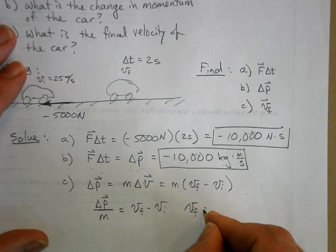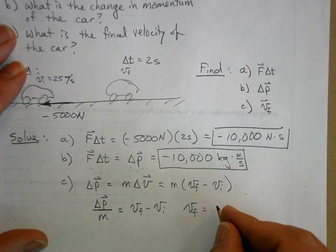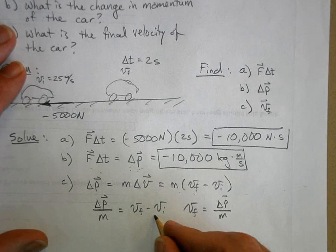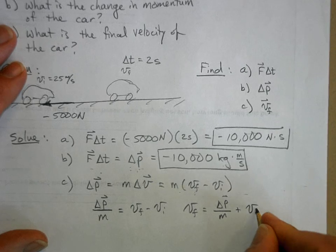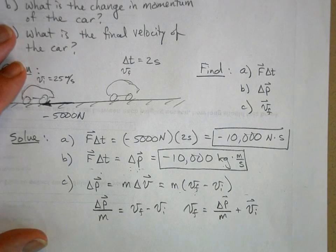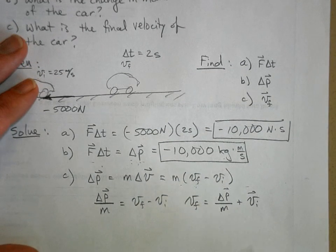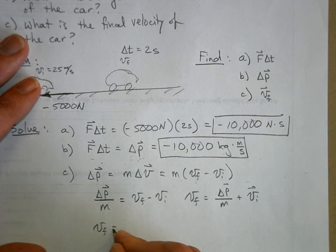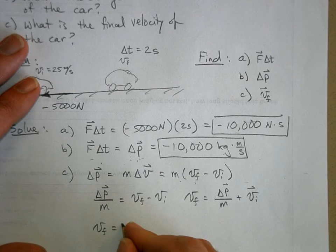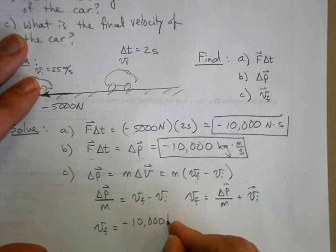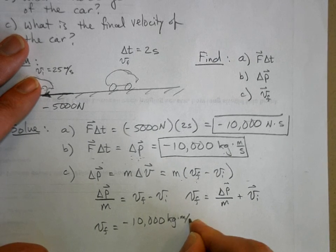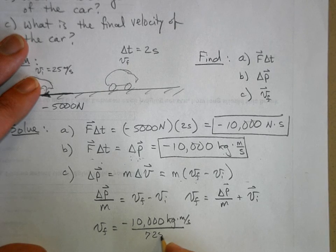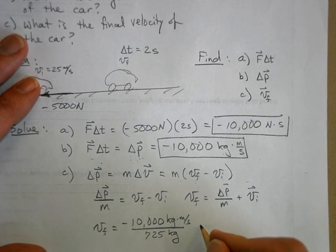So V final is going to be equal to, we'll add that to the other side, so that's the change in momentum over the mass plus the initial velocity. Okay so now I just got to plug my numbers in. V final is equal to the change in momentum which is negative 10,000 kilogram meters per second divided by the mass which is 725 kilograms, plus